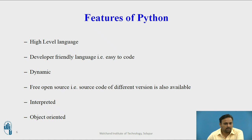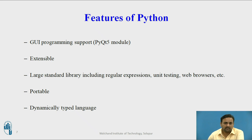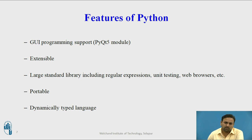Python supports all object-oriented concepts such as abstraction, encapsulation, inheritance, polymorphism, class, and object. It also supports GUI programming, so any graphics-related program can be done using Python. It is extensible — if you want to add any libraries, you can. It already has a very large standard library that includes regular expressions, unit testing, and web browsers.